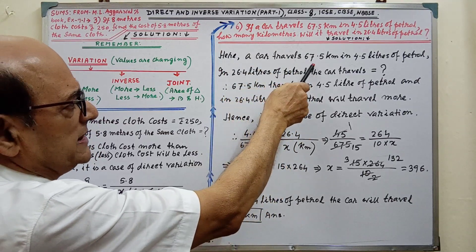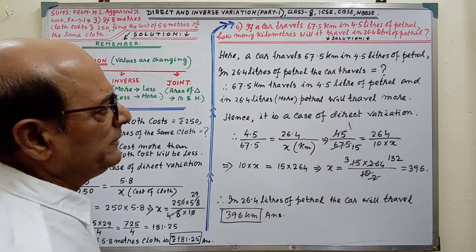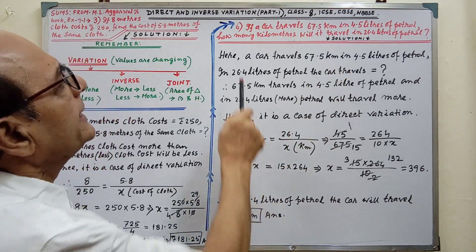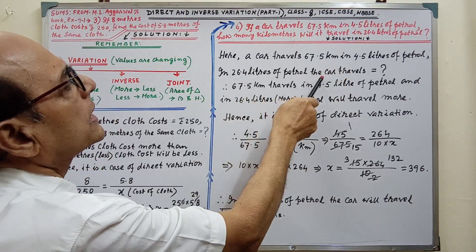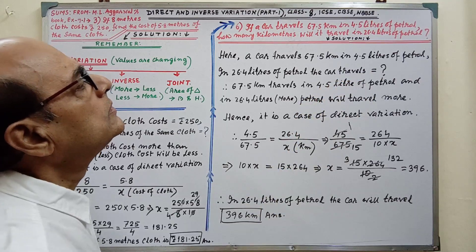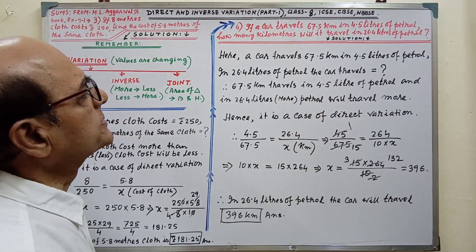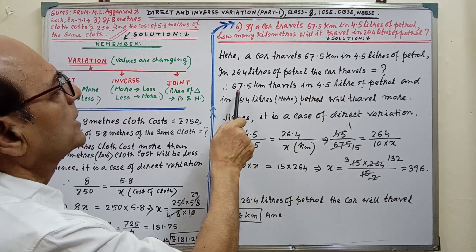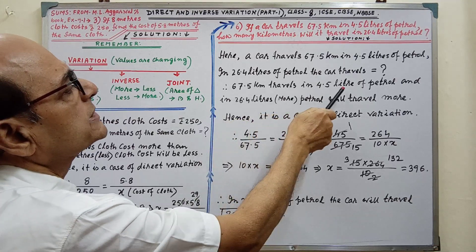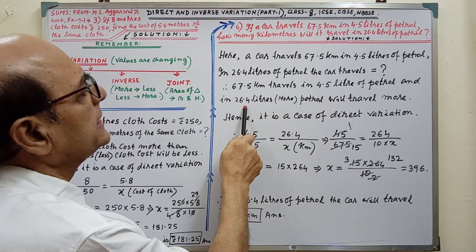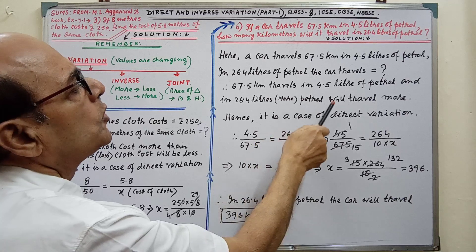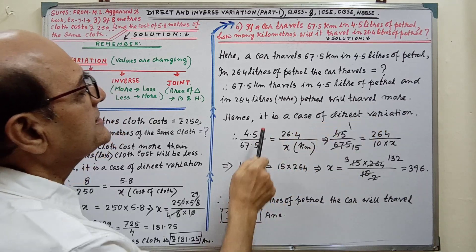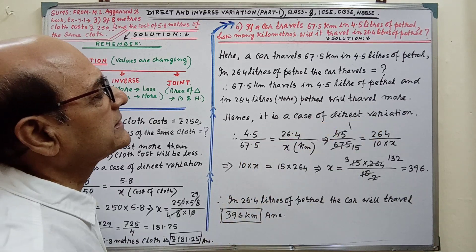Here, a car travels this kilometer in 4.5 liters of petrol. In these liters of petrol, the car travels how many kilometers? That is what we have to find out. This kilometer travels in these liters of petrol, and more petrol will travel more distance. That is, it is a case of direct variation.